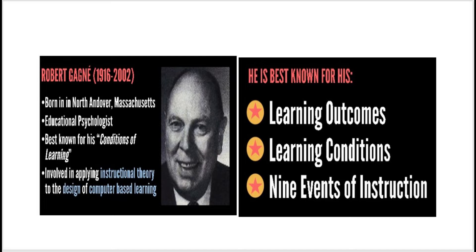Robert Gagné was an educational psychologist who created the 9 step process called the events of instruction. He was best known for his conditions of learning, and was involved in applying instructional theory to the design of computer-based learning. He is best known for his learning outcomes, learning conditions, and 9 events of learning.